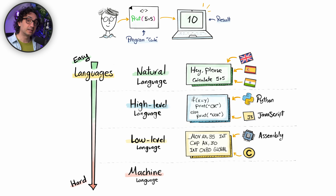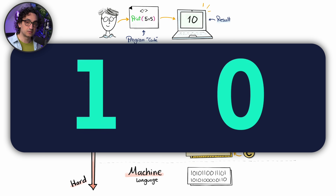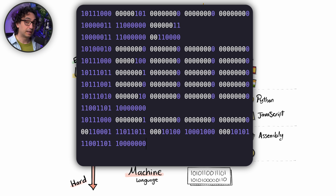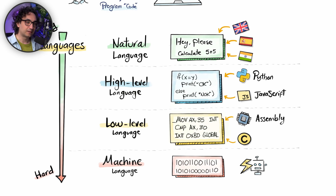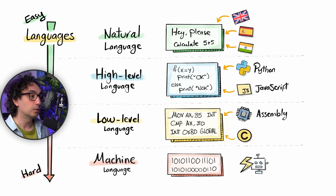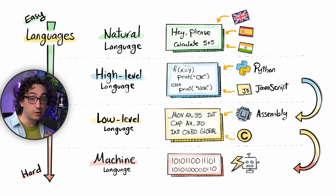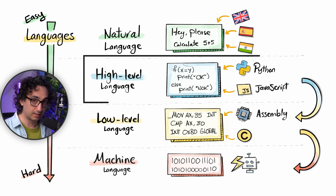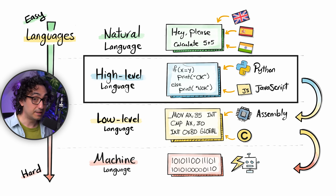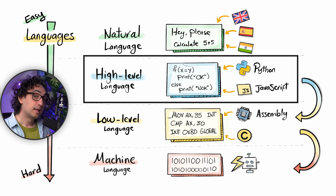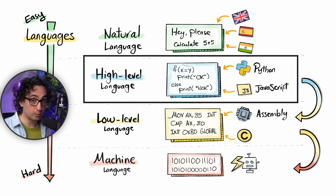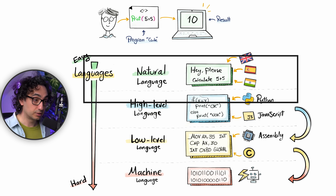At the very bottom we have machine language, made of binary code — combinations of ones and zeros. This is exactly what your computer understands, but it is impossible for humans to read or write. Each step down brings us closer to how the machine thinks; each step up brings us closer to how humans think. Python is close to natural language — it is easy to learn and write, and acts as an abstraction that hides the complexity of low-level languages, like a bridge between both worlds.